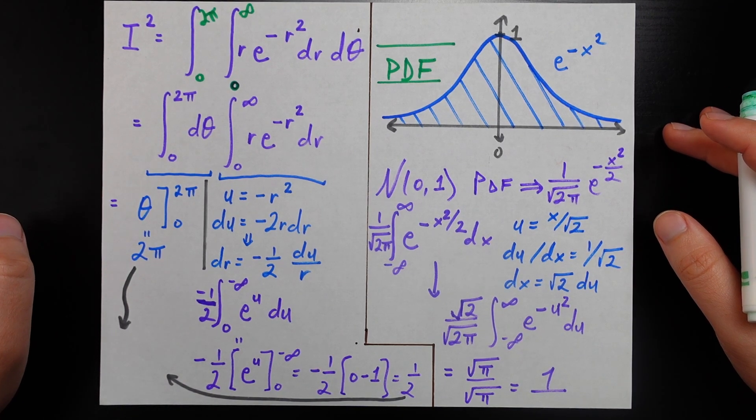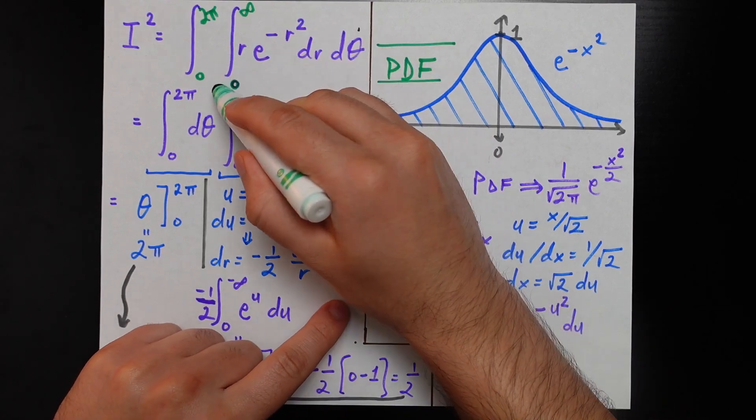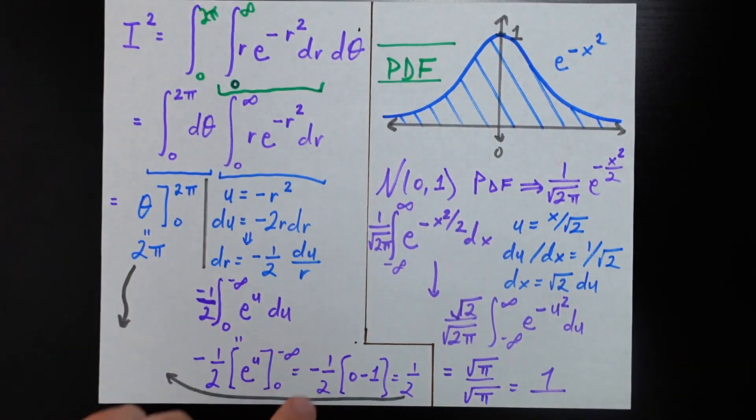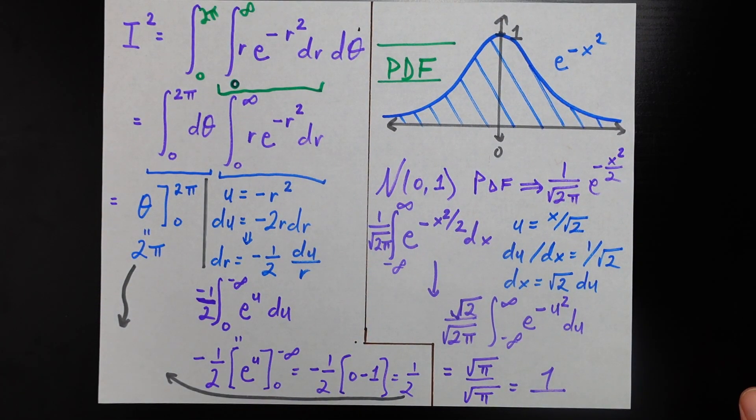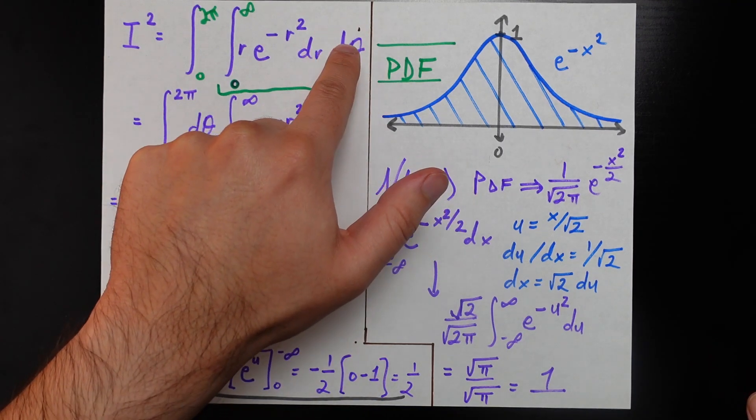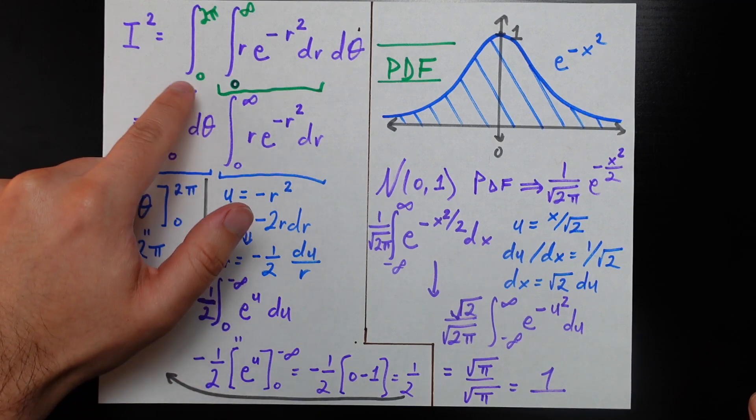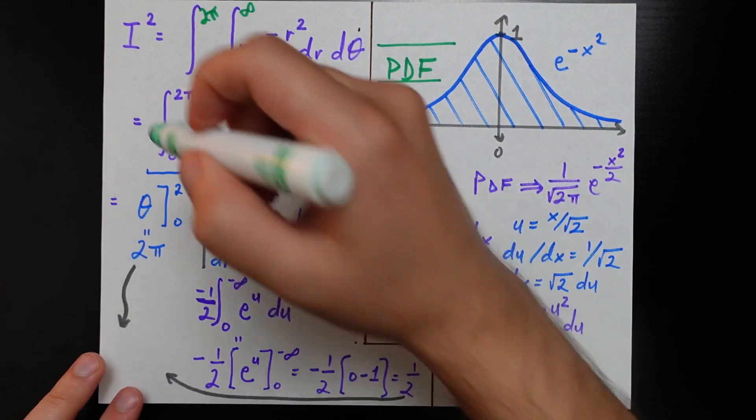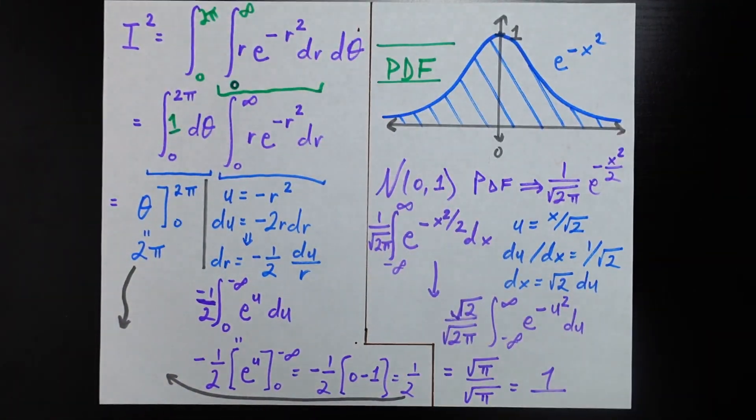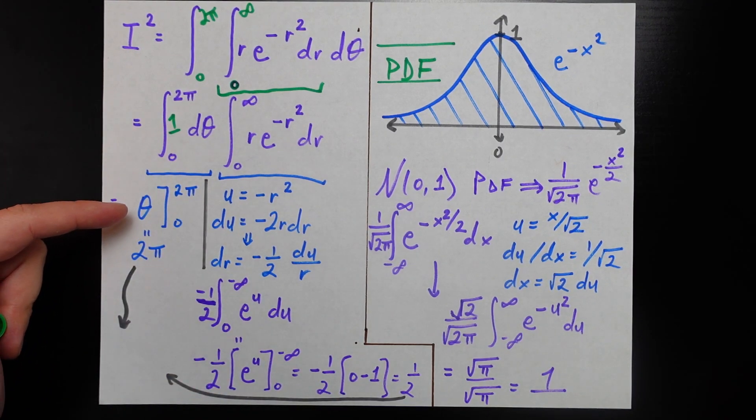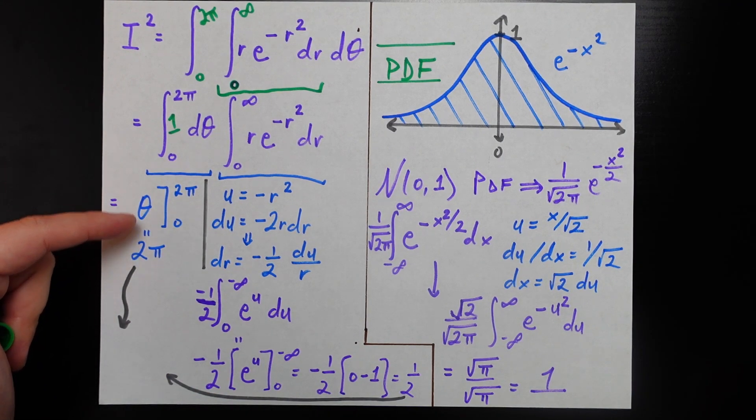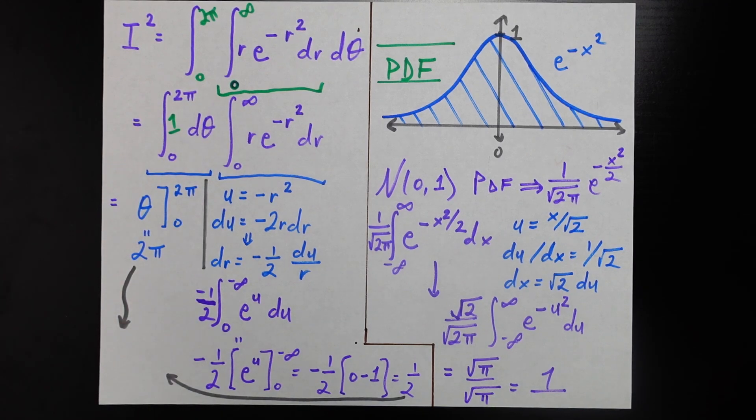Now we have the integral we're trying to solve. It already looks a little bit simpler. One big thing we've simplified is that if you look at this inner integral, everything I've bracketed is just in terms of R. There's no thetas, so we can pull d theta out into its own integral. This is a very trivial integral. It's just the integral of one from zero to 2 pi of d theta, which is just 2 pi.